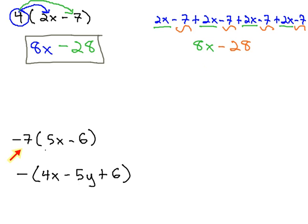So, in this next example, negative 7 times 5x minus 6. What this means is take the negative 7, and multiply by 5x, to get negative 35x.